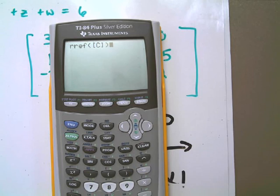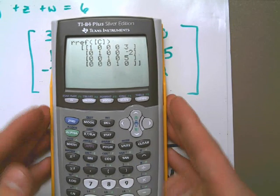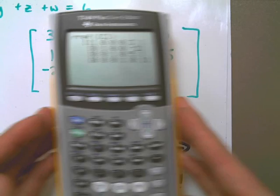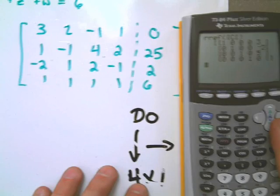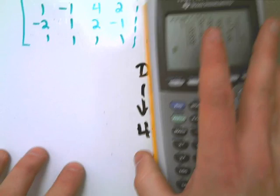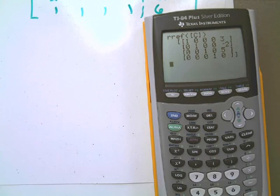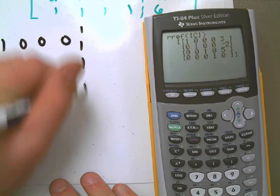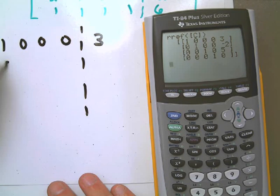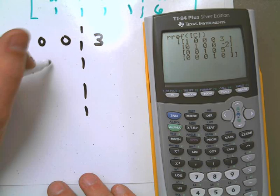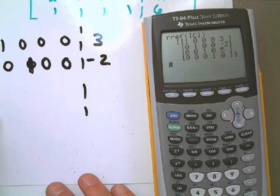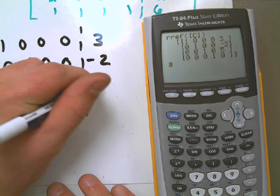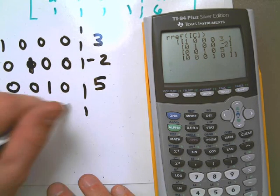The reduced row echelon format is this. And so what it tells us is that if I were to reduce this matrix to its reduced row echelon format, I would get the following: 1, 0, 0, 0 dotted line, 3. 0, 1, 0, 0 dotted line, that is 2. 0, 0, 1, 0, 5. And 0, 0, 0, 1, 0.